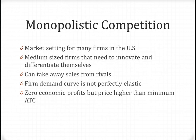The next type of market structure is called monopolistic competition. In monopolistic competition, there are a lot of medium-sized firms who need to innovate and differentiate themselves. It's a market setting for most firms in the United States. They use pricing strategies or they create new products in order to take away sales from their rivals. The firm's demand curve is not perfectly elastic because of this, as the products are no longer perfect substitutes. Changes in prices can significantly impact revenue. Because the goods are not identical, there will be people who choose to buy products from other firms, and therefore the firm cannot sell as much as they can produce. These firms will tend to have zero economic profits, but they will sell their products at a price higher than the minimum average total cost. Therefore, it's not as efficient as perfect competition. An example of monopolistic competition is the clothing industry, an industry with a lot of firms who try their best to make their products as different as possible.